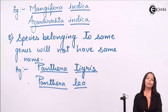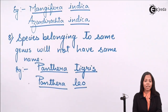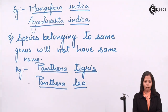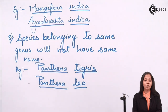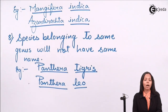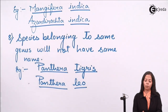Rule number nine: the genus name is a noun, specifically a proper noun, and the species name is a descriptive adjective.